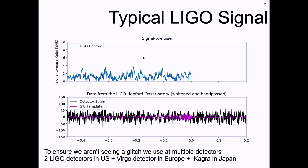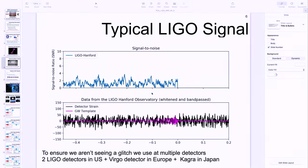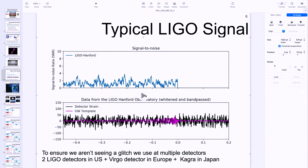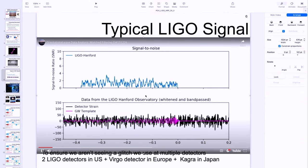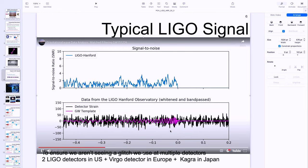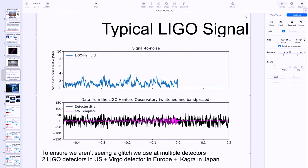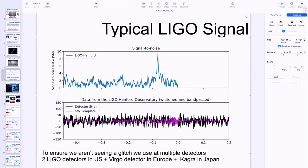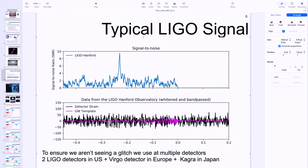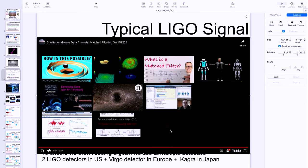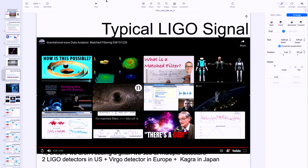In practice, each LIGO detector gives a single stream of data — the strain, which is the distance in the interferometer. We search for gravitational waves by doing essentially a dot product with the data against a known hypothesis of what a gravitational wave looks like, and we suddenly get a large signal. That's the basic challenge.